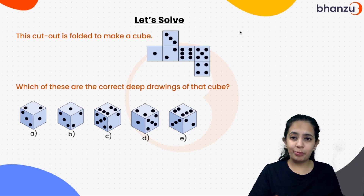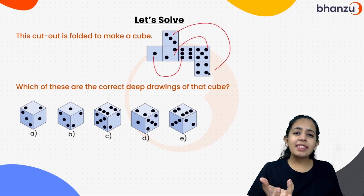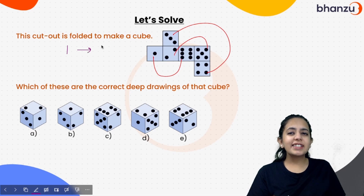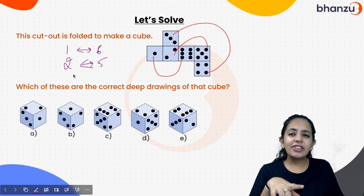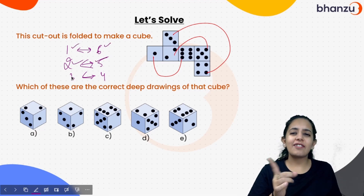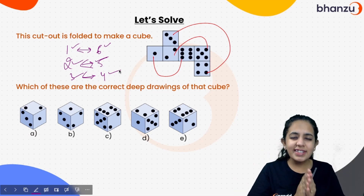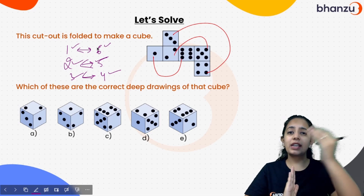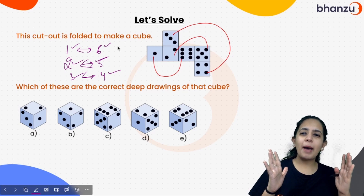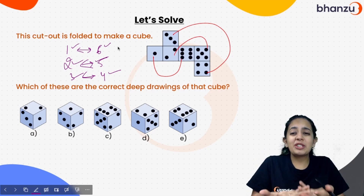Now let's solve the last fun question of the day. This is the net of a cube. Remember that in a cube, opposite faces are always alternate: these two are opposite, these two are opposite, and three and four are opposite. So one is opposite to six, two is opposite to five, and three is opposite to four. The sum is always seven: one plus six, two plus five, three plus four. If one is at the front, six is at the back — opposite faces cannot be together.